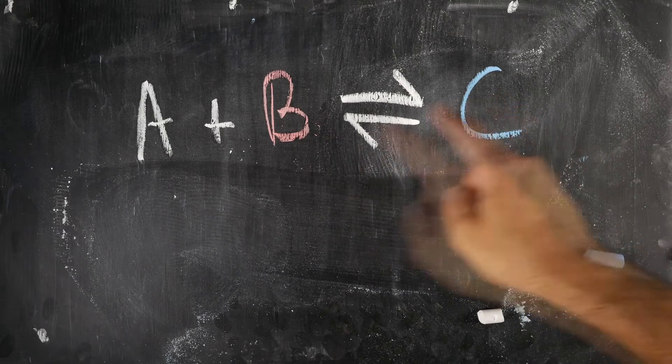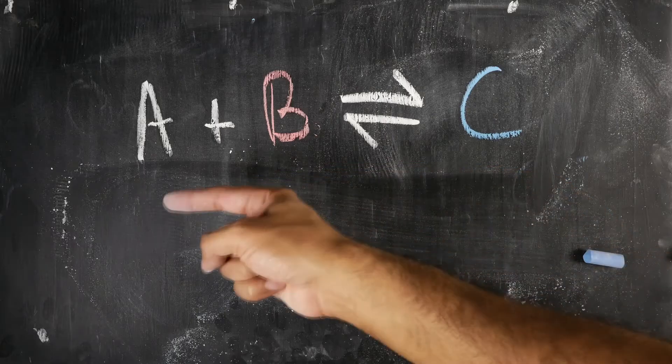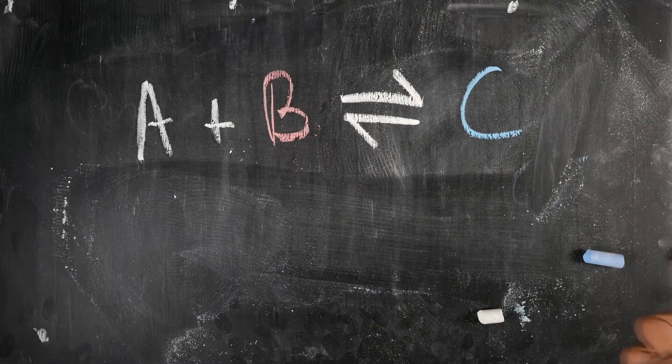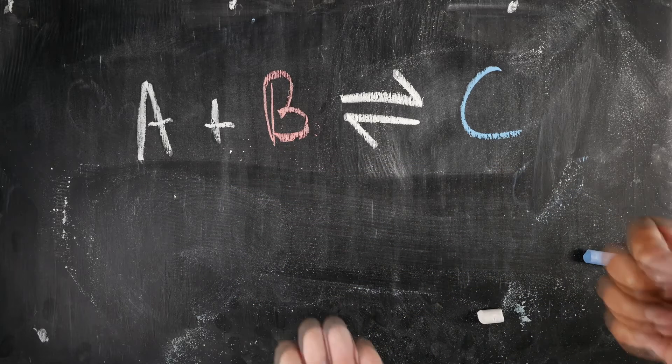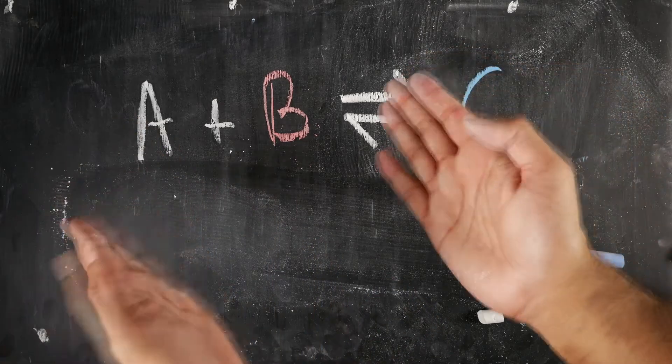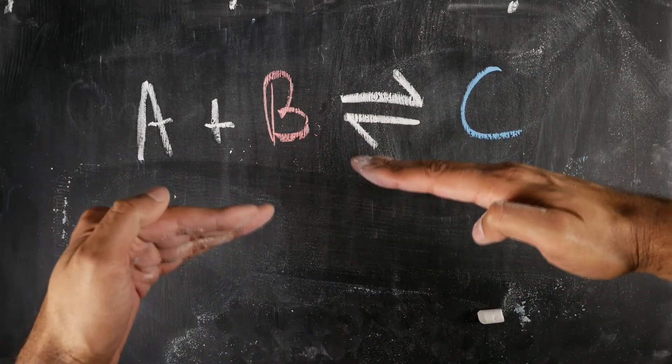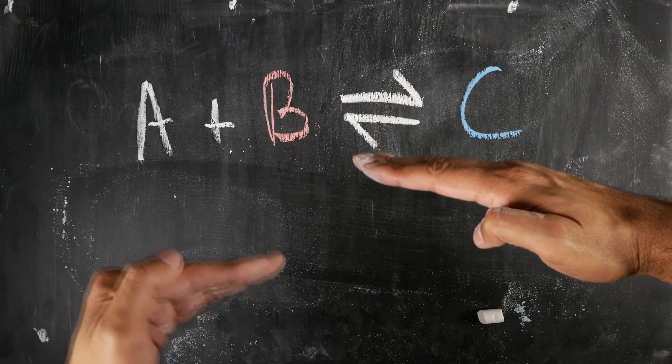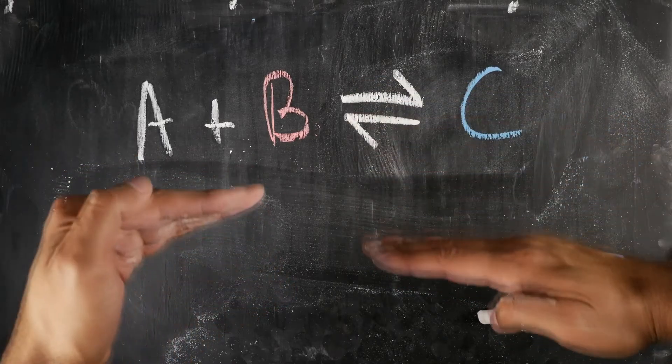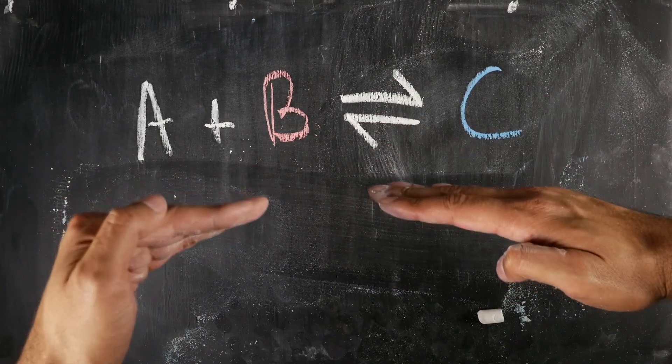Now consider this reaction. We've got A plus B giving you C. We've got the forward reaction and also we've got the backward reaction as well where C can turn into A plus B. Now this is a balancing act. So it's a little bit like this: if you increase this one, so it's like a scale.